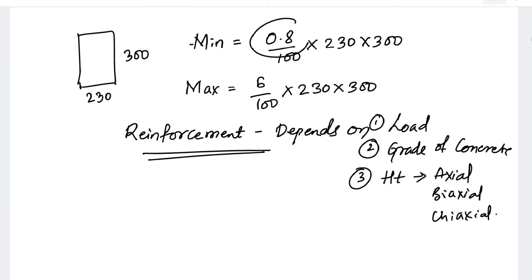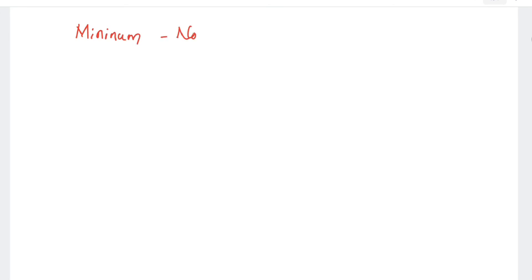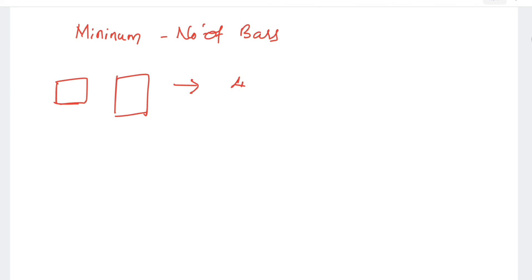The minimum and maximum percentage is 0.8 to 6 percent. When it comes to the minimum number of bars, for square and rectangular columns it is a minimum of four bars, and for circular columns it is a minimum of six bars.